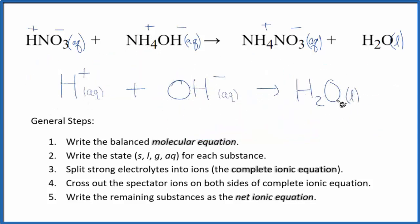So this is our balanced net ionic equation for nitric acid plus ammonium hydroxide. You'll notice charge is conserved. We have a positive and a negative. That cancels out. We have a neutral compound.